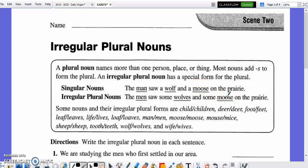Some nouns and their irregular plural forms are child to children, deer remains deer, one foot becomes two feet, leaves is the irregular plural for leaf, life becomes lives, one loaf of bread becomes loaves with a V-E-S, man is men, moose remains moose, mouse becomes mice if you're talking about more than one, sheep remains sheep, one tooth turns into multiple teeth, wolf becomes wolves, as we saw above here, and one wife to multiple wives, with the V-E-S.